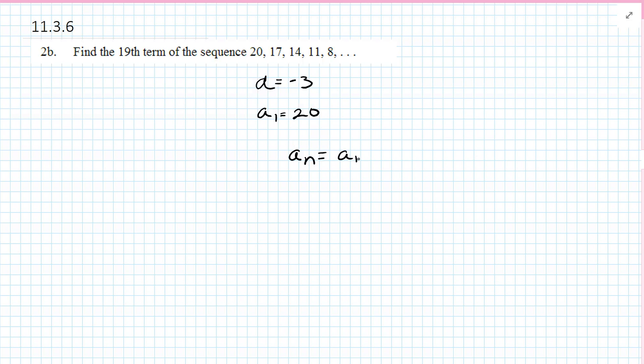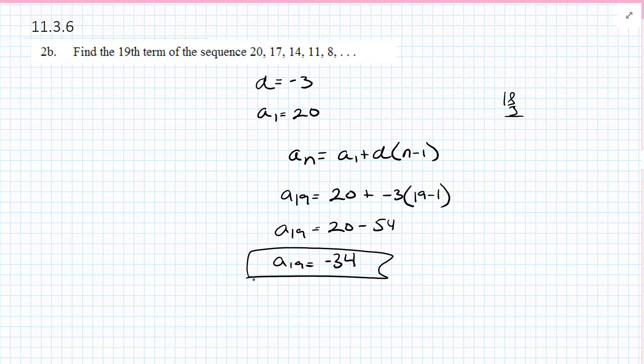So an equals a1 plus d times n minus 1. So a19 equals 20 plus negative 3 times 19 minus 1. So a19 equals 20 minus whatever 3 times 18 is, 54. So a19 is negative 34. Does it make sense how we got all those values? We found the common difference, we know what the first term was, then we just stuck it in explicit form.